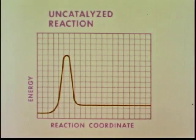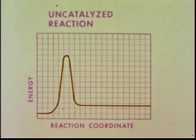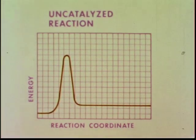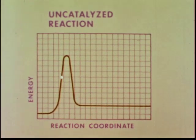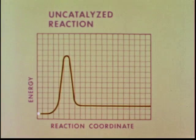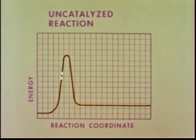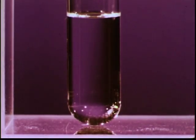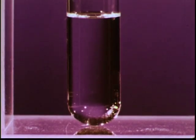The barrier for the uncatalyzed decomposition of formic acid is high. The energy of collision between formic acid molecules is almost never enough to reach the top of the barrier. This is why in liquid formic acid virtually no decomposition occurs.